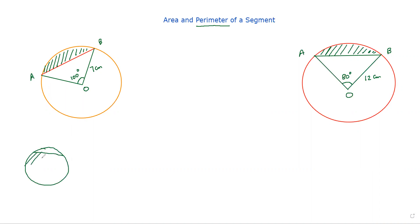For example, if you define all of this area, first of all you find the area of the sector, and then you add up the triangle in this case. But when you have the minor segment, you find the area of the sector and then you take out the area of the triangle. So we have already covered that.